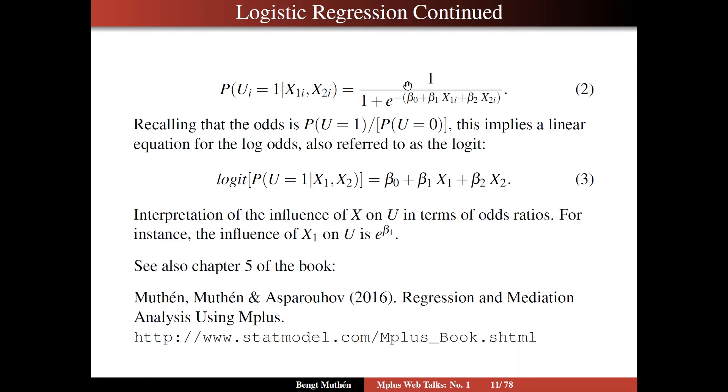So here's the formula again, and to understand it further, we recall that it relates to odds and odds ratios. The odds for u equals 1 is the ratio of the probability of being u equals 1 divided by the probability of u equals 0, or more generally, 1 minus probability of u equals 1.